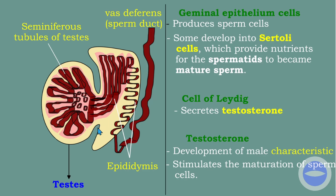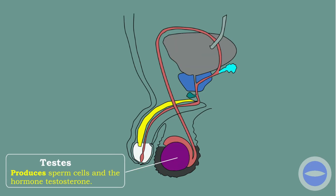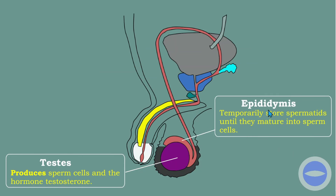So here I discussed the function of the testes and how the testes help in the male reproductive system. Now the next part is the epididymis. The function of the epididymis is to temporarily store spermatids until they mature into sperm cells. The sperm stored inside the epididymis is immature; it matures there, and after maturing it is moved out of the epididymis.